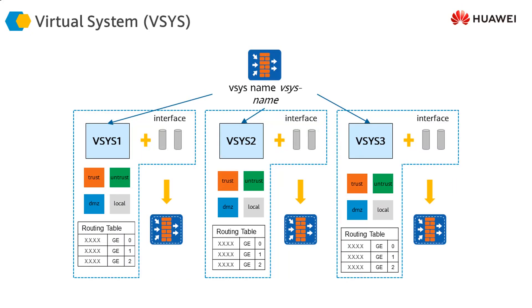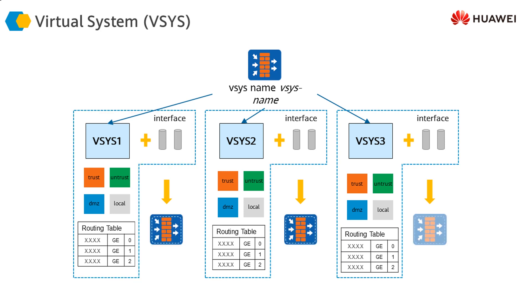As can be seen in the picture, this physical firewall has been divided into multiple virtual firewalls — vSys1, vSys2, and vSys3. Each of these virtual systems will have their own zones, their own routing tables, and their own session tables. Everything available on a physical firewall will also be available on these logical firewalls. They will have their own dedicated interfaces and will behave and act exactly the same way as a physical firewall does.